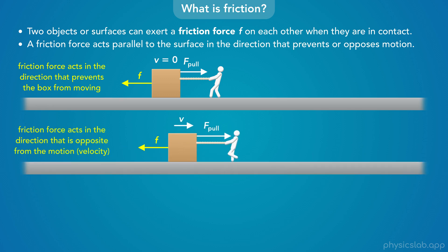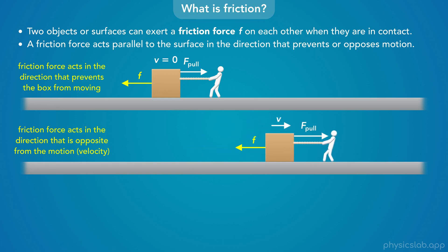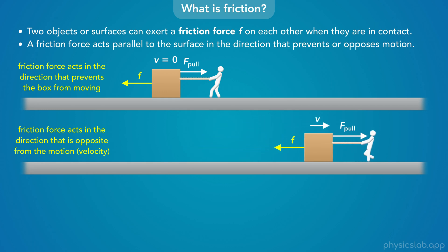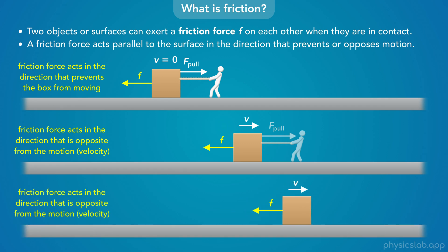If you pull harder on the box and you get it moving, then the box's motion is to the right, so we would say the friction force points to the left because it opposes the box's motion. The friction force on the box has the opposite direction as the velocity of the box. And if you stop pulling on the box, there's still a friction force from the ground while it's moving, and it still points to the left, in the opposite direction as the velocity. So a friction force can act on a non-moving object or a moving object, and its direction always prevents or opposes the object's motion.